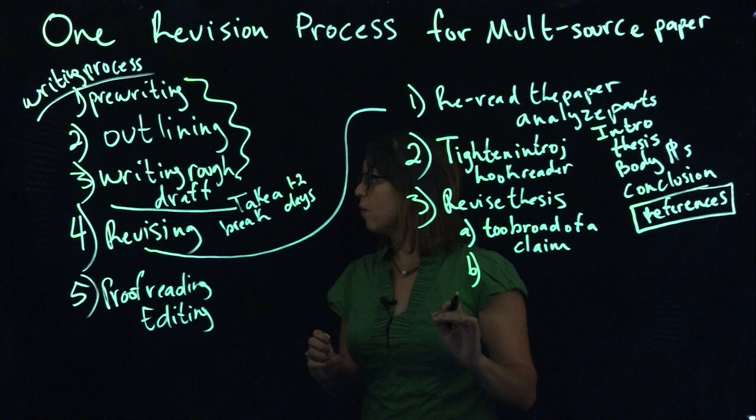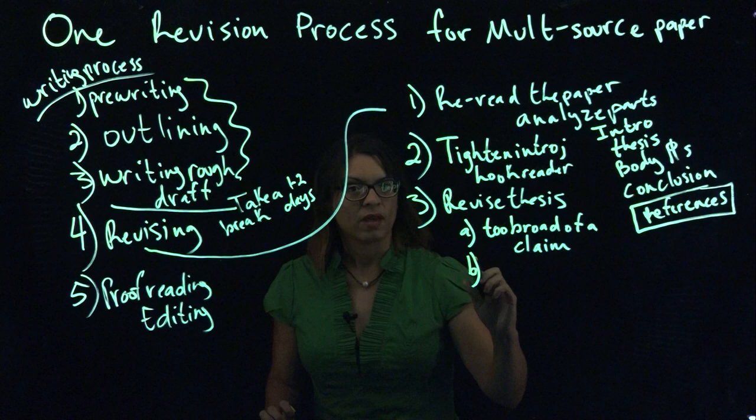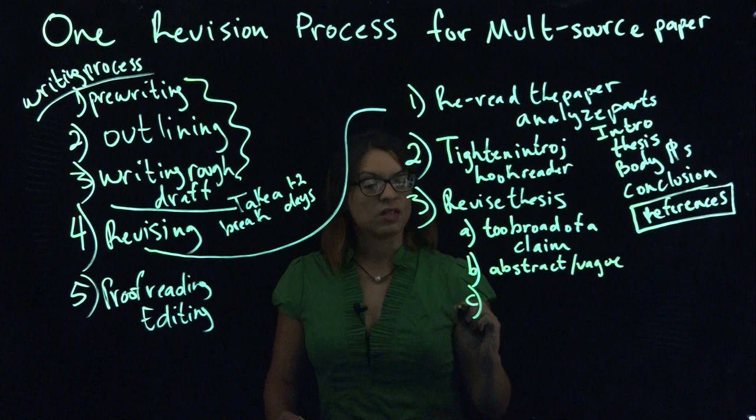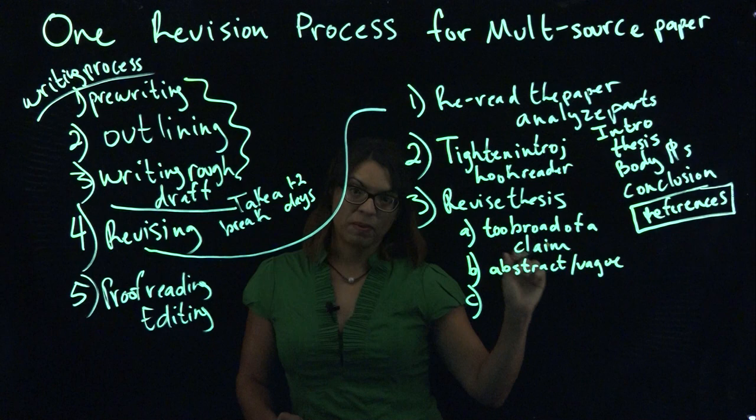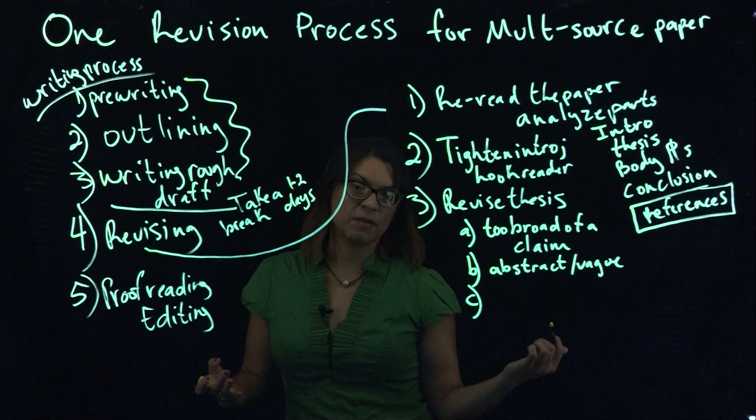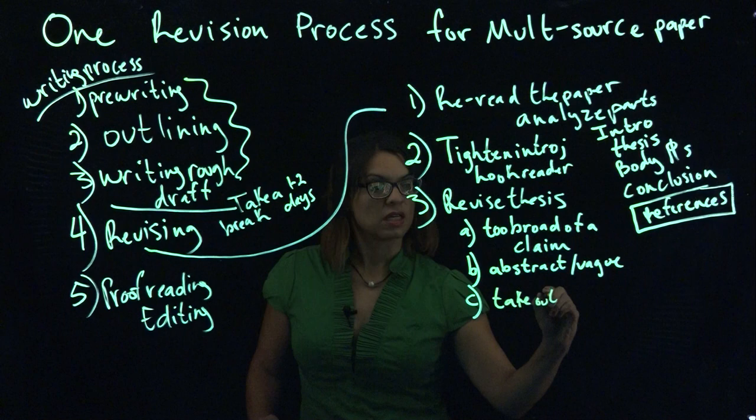Another way that your thesis statement can go wrong would be maybe your language is too abstract or vague and we can't visualize what you're saying in the thesis. Try to work toward creating concrete language, things that we can picture, claims that you can support with facts and evidence in that thesis statement. Another way that you could work on that thesis statement to make it better would be to take out wordiness.